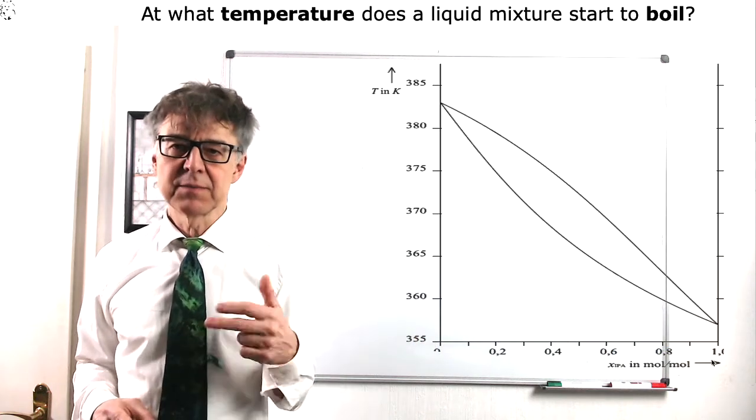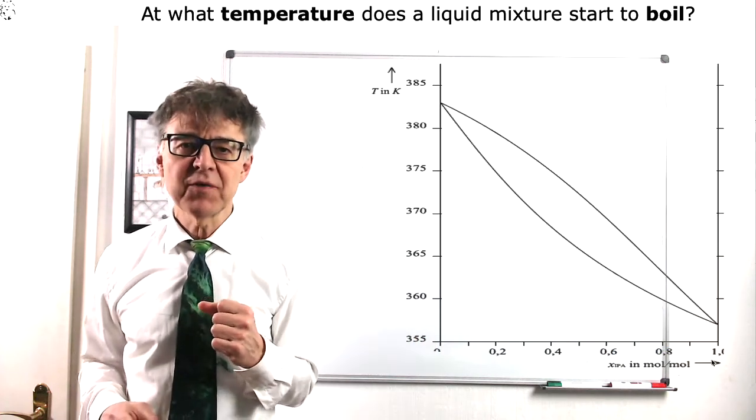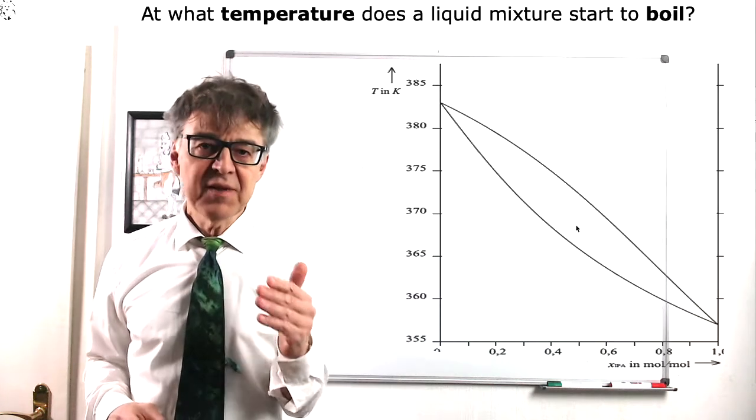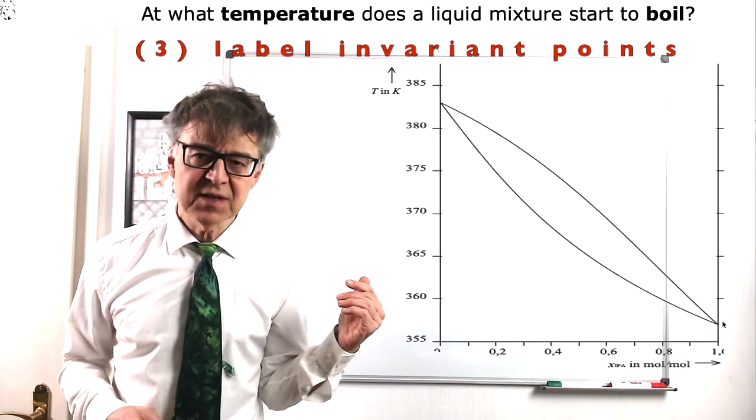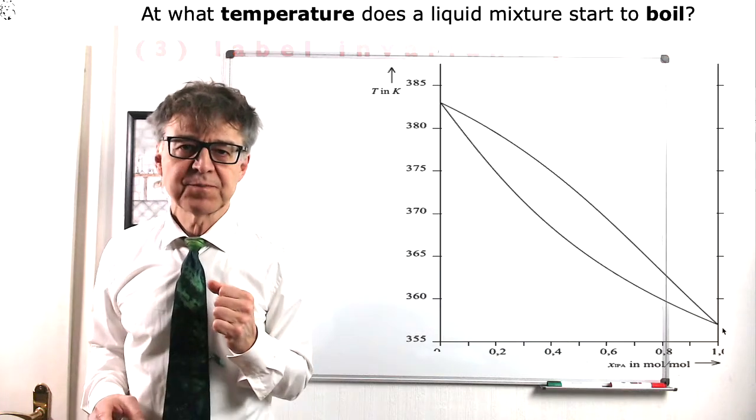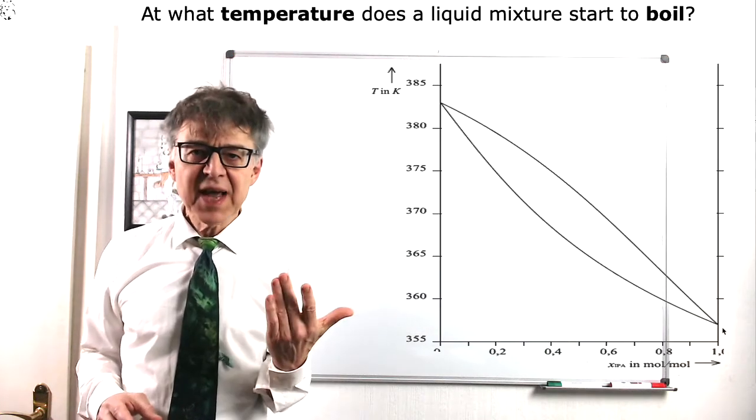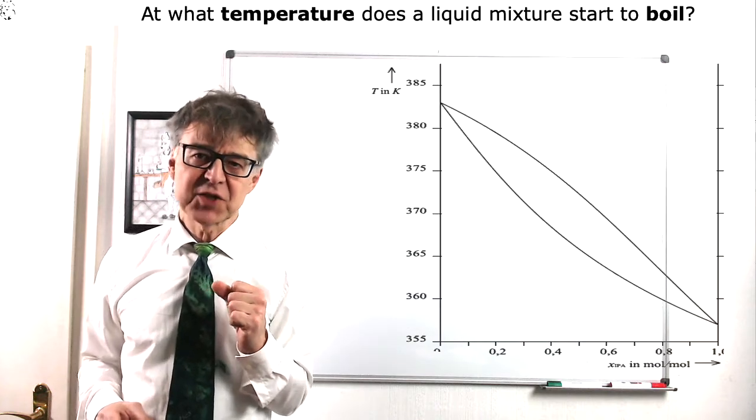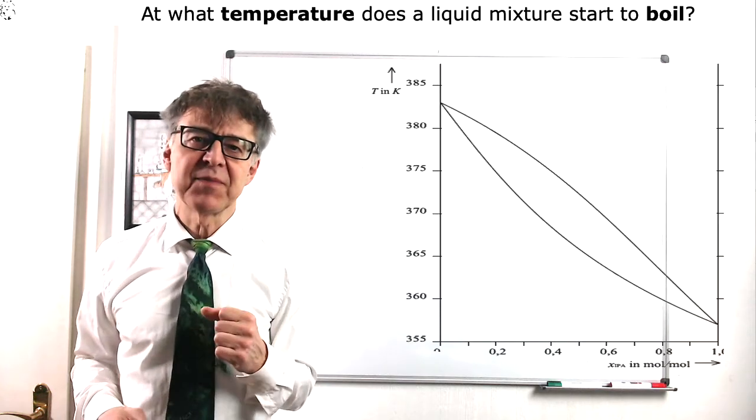The two binodals, boiling point curve and dew point curve, intersect in two points. These are called invariant points. In this case, these are the boiling points of the pure components. The phase diagram may answer many questions on the behavior of mixtures. We will discuss some of them now.